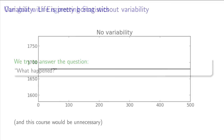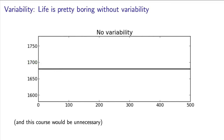Let's take a look at this plot. There's no variability here, and there's nothing to explain. The only thing that happened is that the process was operating consistently at a level of 1680 for the last 500 samples. It's not very interesting, but it is a good process. We would like to produce product like that all the time.